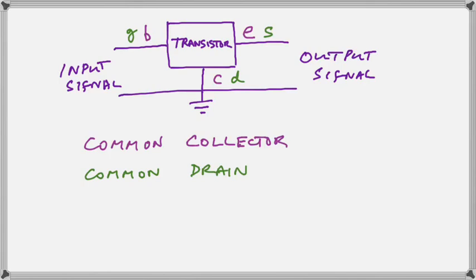Finally, we look at the common collector or common drain. I told you before that the input can never go to the collector, but that does not mean that the collector cannot be common. So when we have the collector as the common leg of the transistor, then we put the input into the base or gate, and the output comes from the emitter or source.